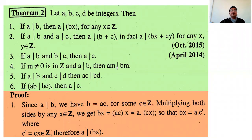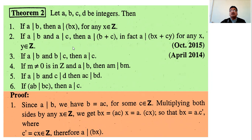The next topic is some properties of divisibility, where a, b, c, d are integers. The first theorem: if a divides b, then a divides bx. Also, if a divides b and a divides c, then a divides b+c, and a divides bx+cy for any x, y in Z. If a divides b and b divides c, then a divides c. If m is not equal to zero and a divides b, then am divides bm. If a divides b and c divides d, then ac divides bd. If ab divides bc, then a divides c.